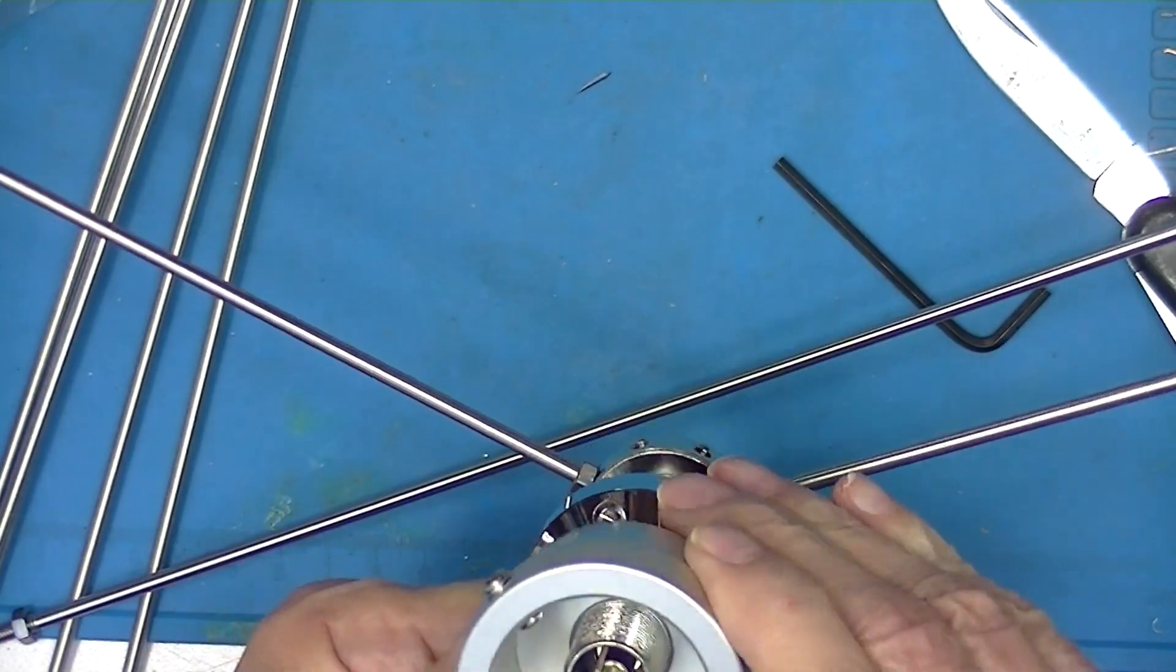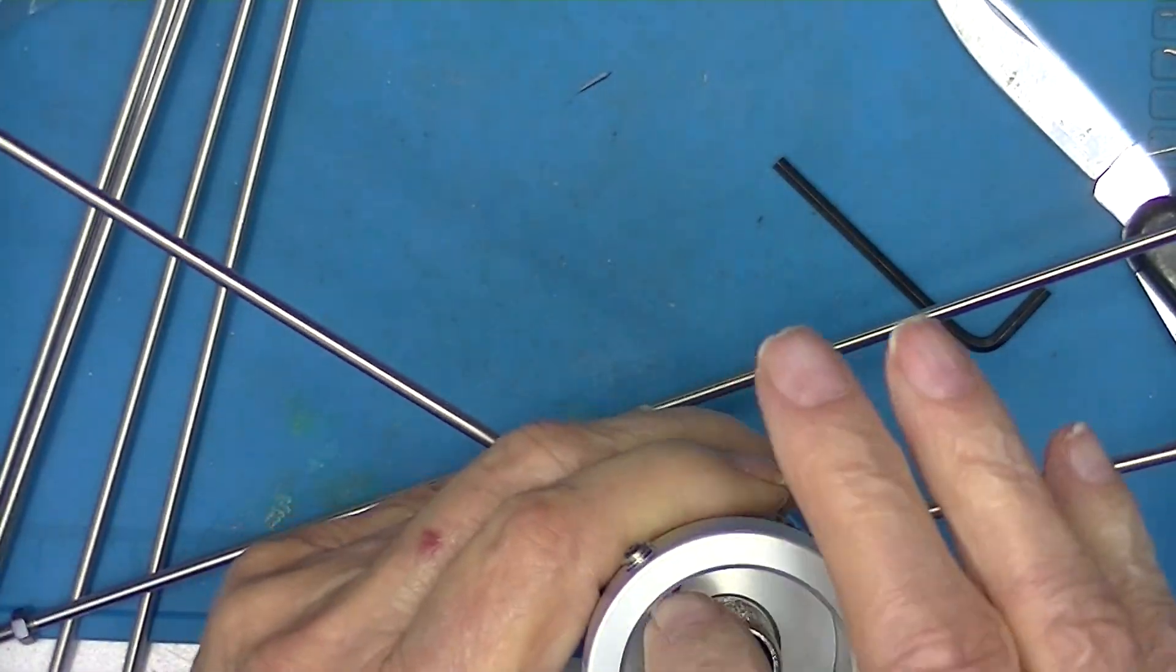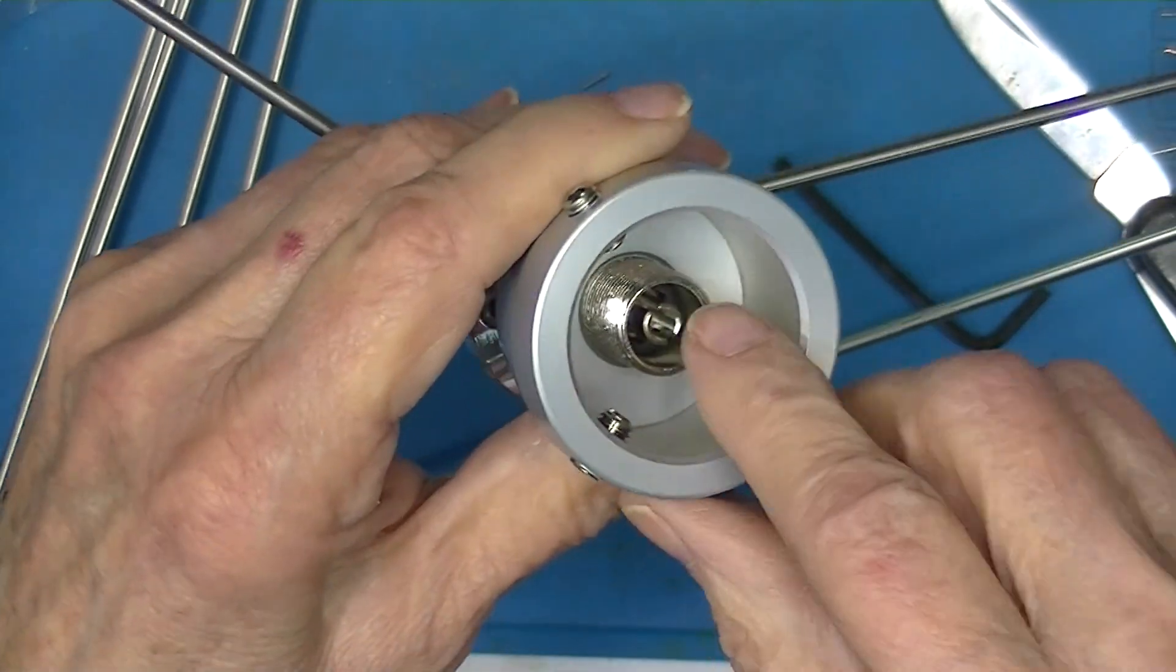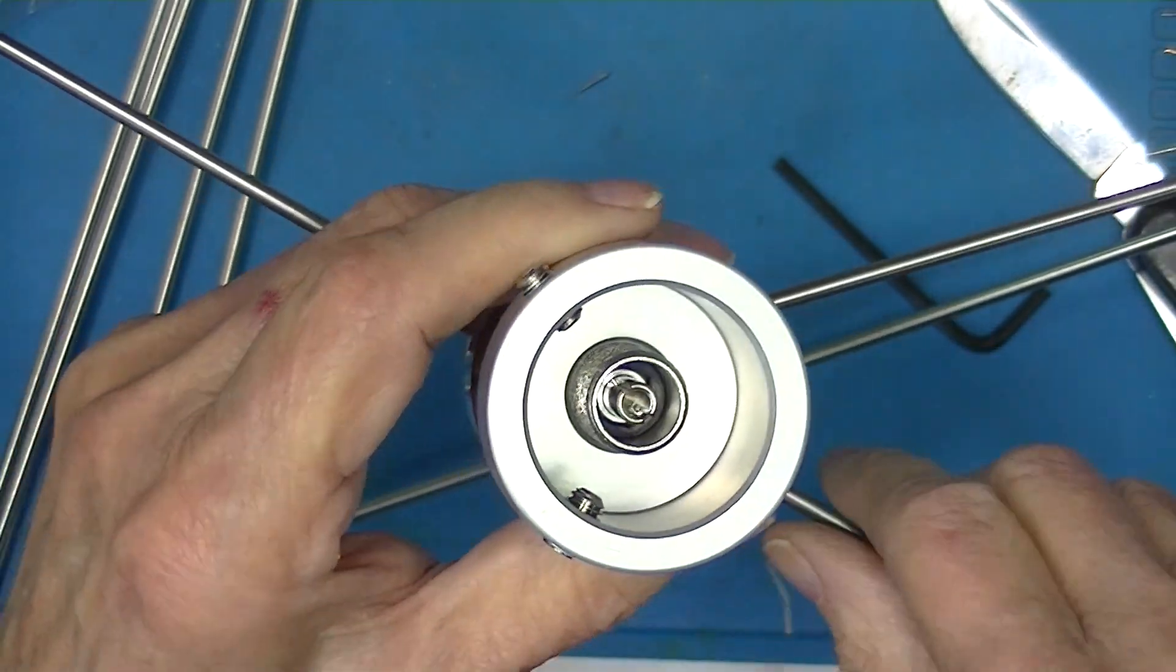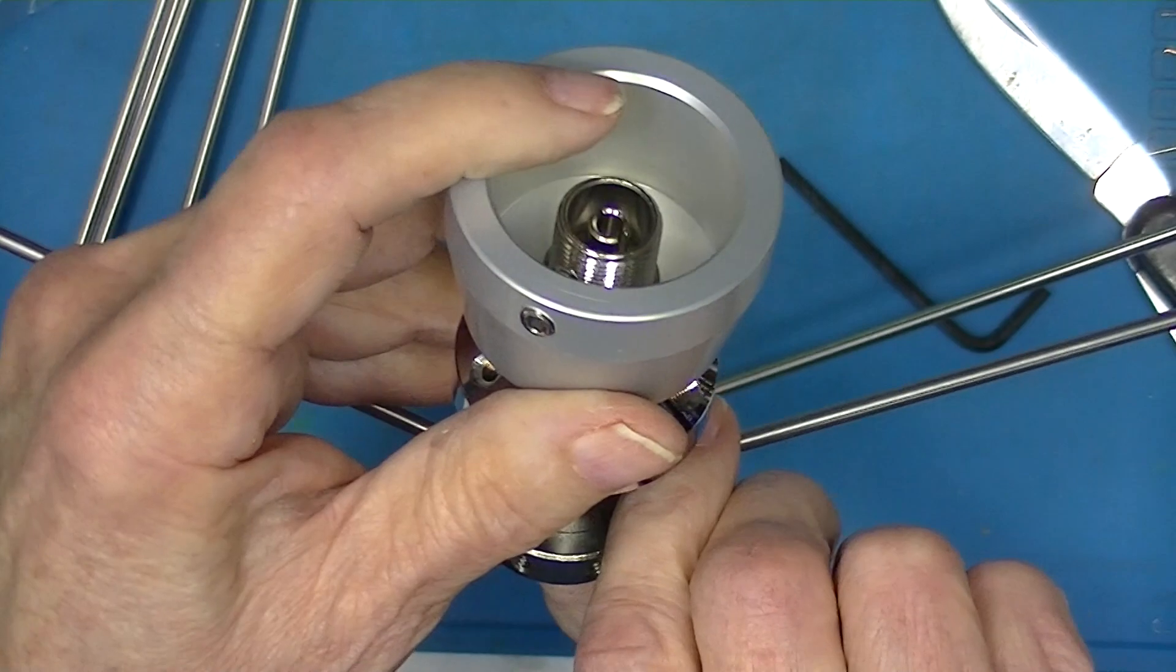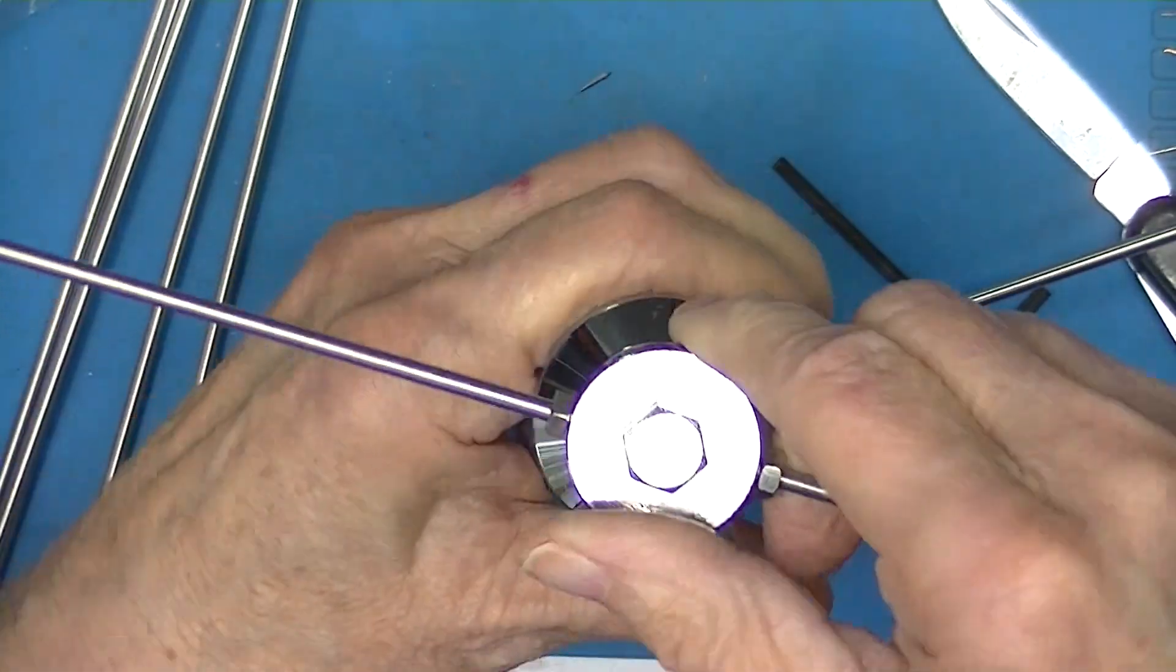I think the intent is of course to mount this on the pipe and run the coaxial cable down the pipe, which means this exits somewhere along the length of the pipe.